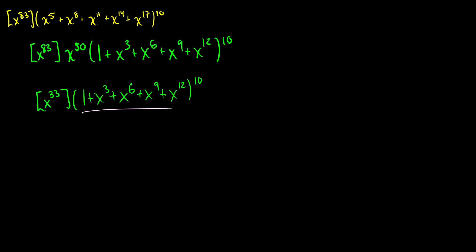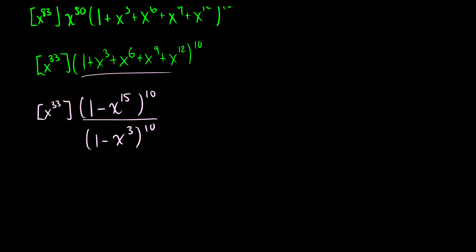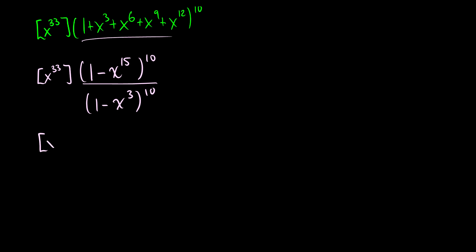At this point we want to turn this into a generating function. We're going up in powers of 3, so the denominator will be (1 - x^3)^10. It stops at x^12, and the next power above would be x^15, so we multiply by (1 - x^15)^10. This gives the coefficient of x^33 in (1 - x^15)^10 over (1 - x^3)^10, which we rewrite as (1 - x^15)^10 times (1 - x^3)^(-10).